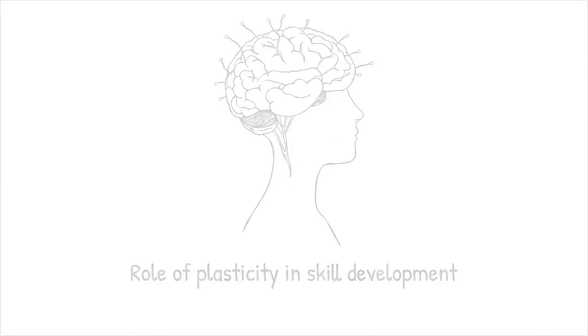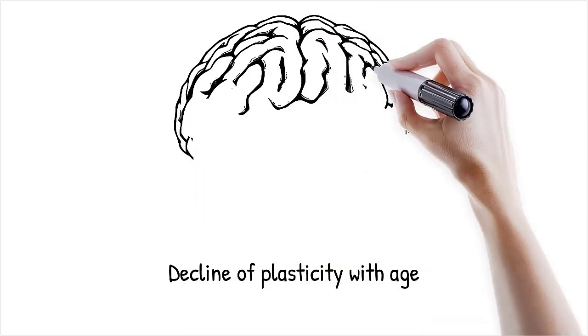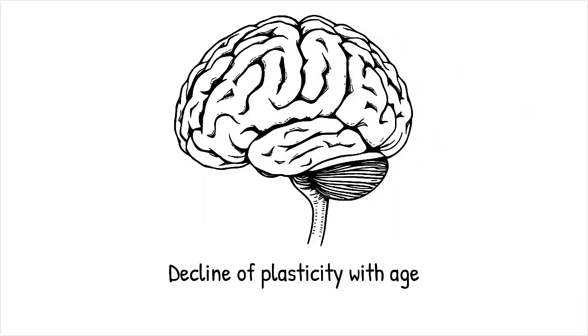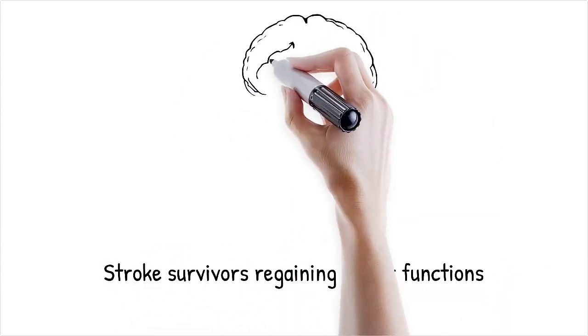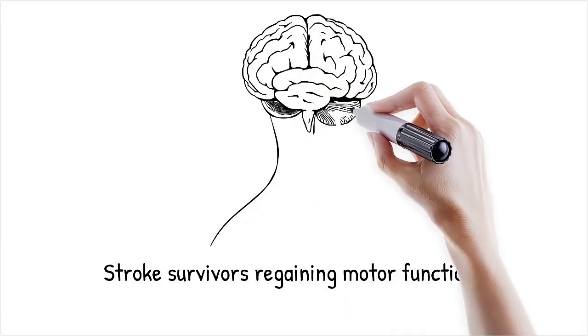However, plasticity declines with age and excessive stress or trauma can disrupt neural networks, leading to cognitive impairments. Stroke survivors can regain lost motor functions by retraining different parts of the brain to take over damaged functions.